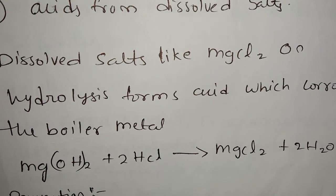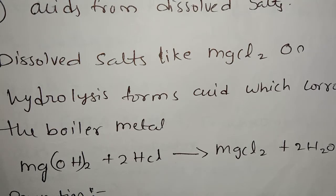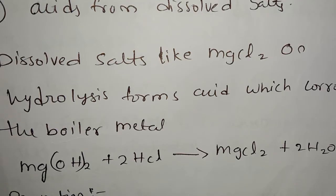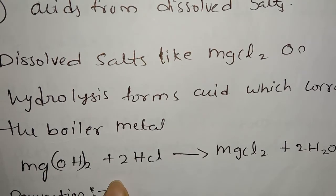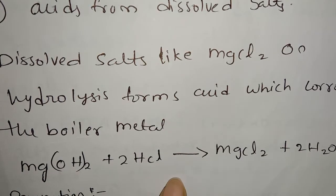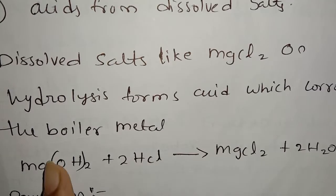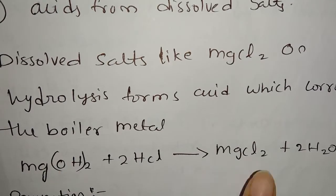This salt is MgCl₂. In this case, it is dissolved in the hydrolysis form. In the acids formed, it is dissolved and corrodes the boiler metal. The reaction gives: MgCl₂ + 2H₂O → Mg(OH)₂ + 2HCl.